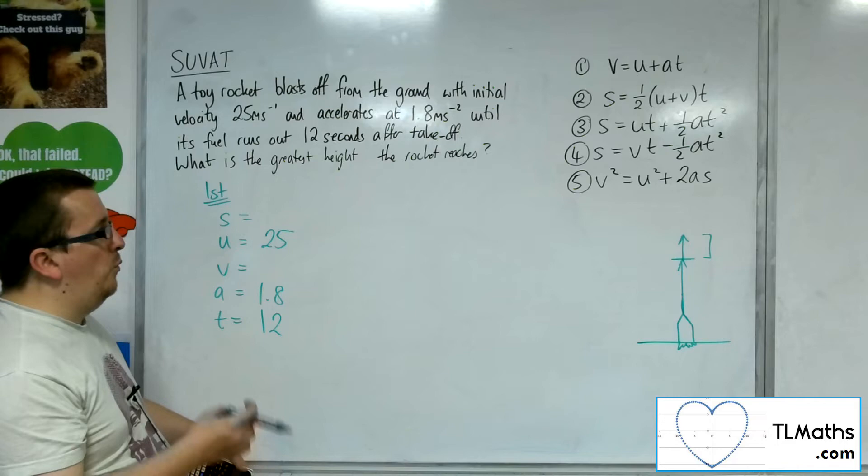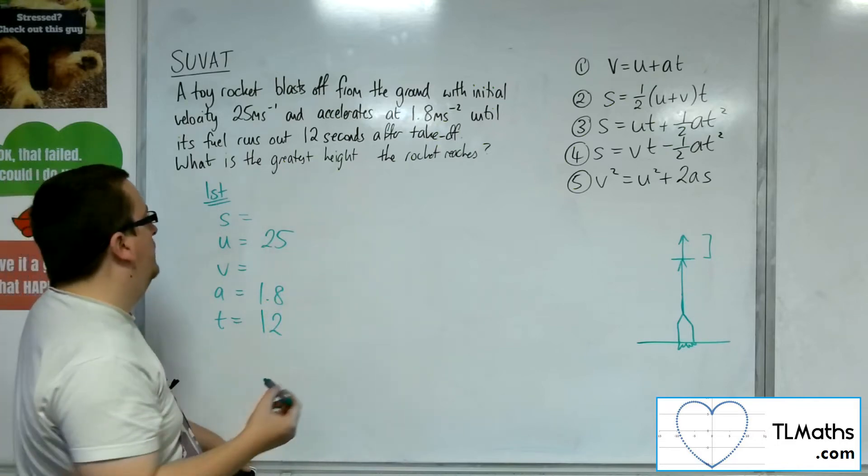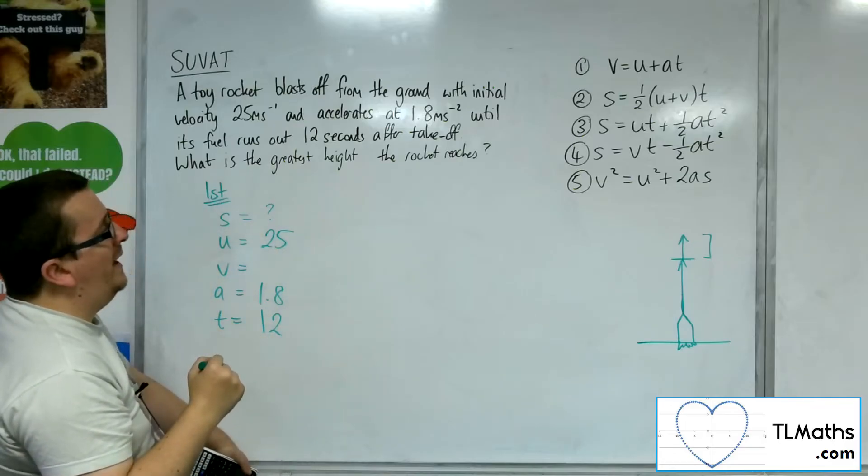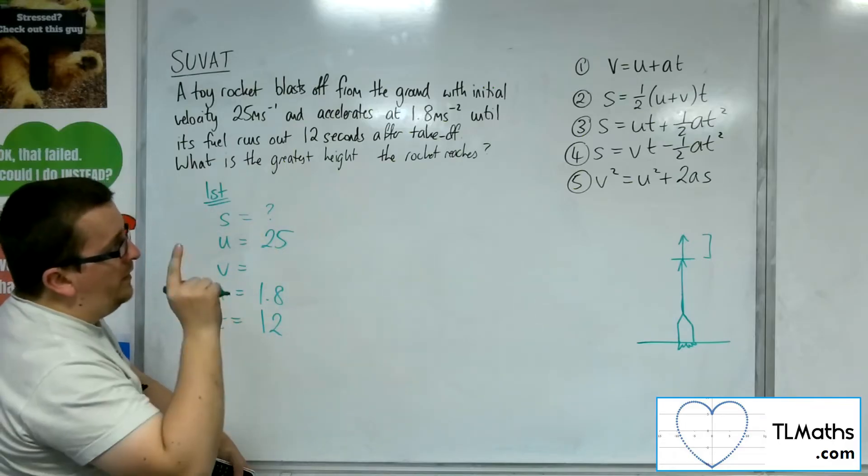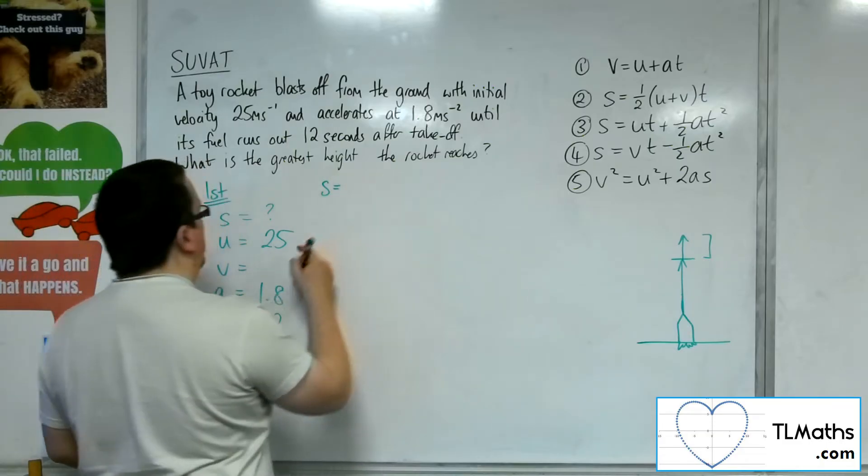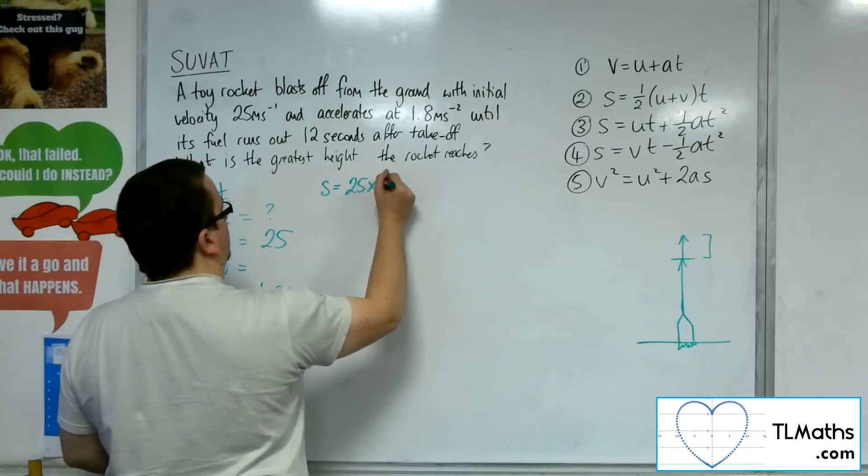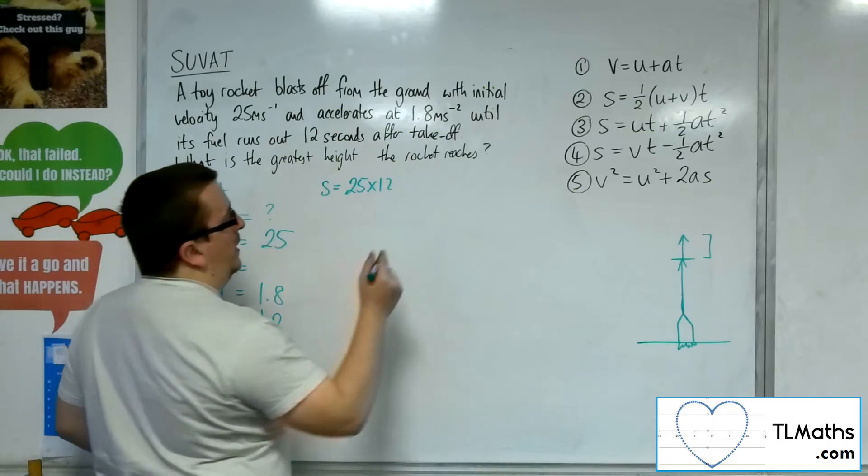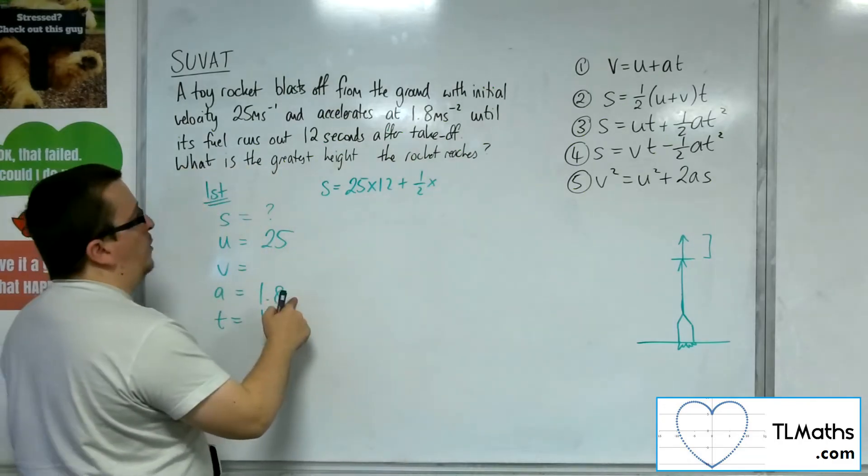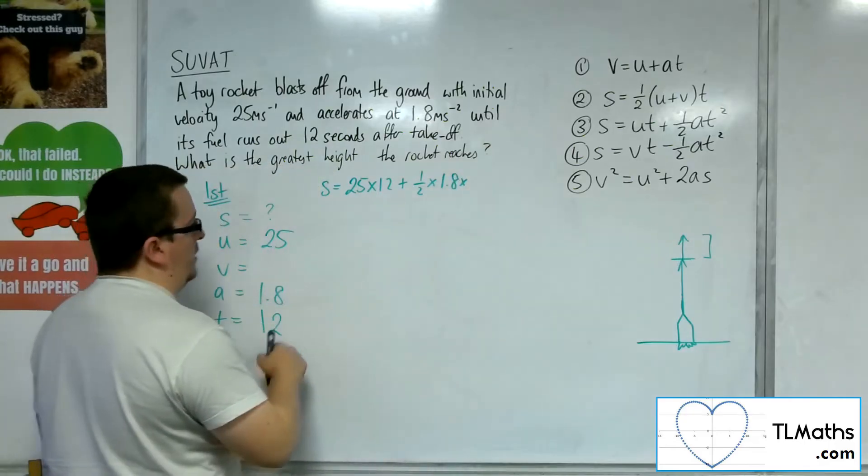So what I want to do is I want to work out both the S and the V. So let's work out the S first. This is the equation that doesn't have the V, which will be the third equation. So S is equal to U times T, 25 times 12, plus 0.5 times A, so 1.8, times T squared, so 12 squared.